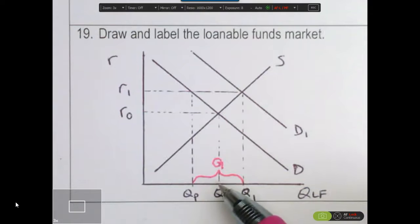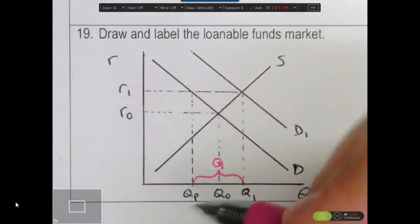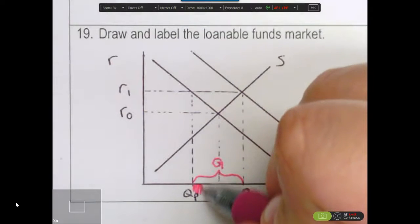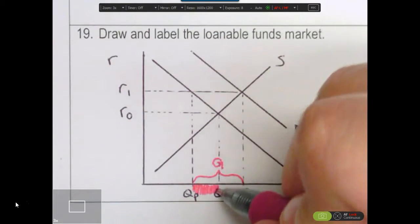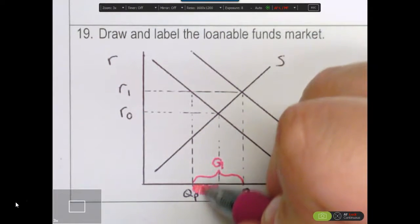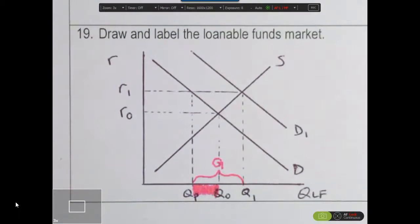This Q0 represented private investment. Now we see that a portion here from QP to Q0, which was private, is now being borrowed by the government. So we know that this portion in here, which was private and is now government, has been what we would call crowded out of the market.